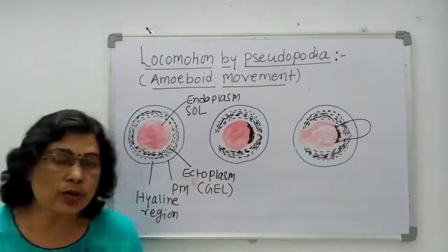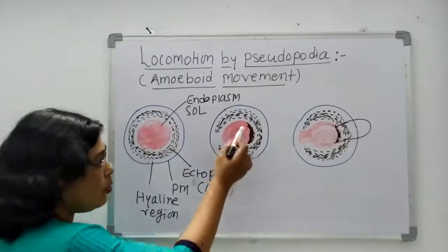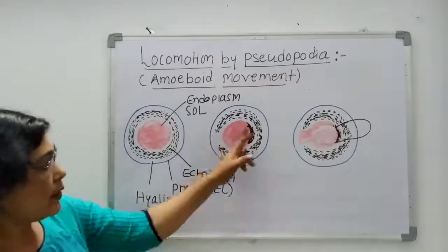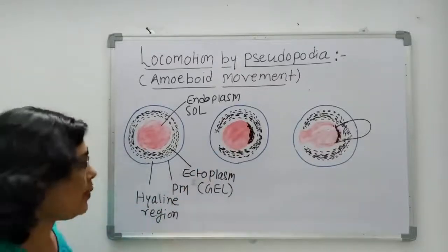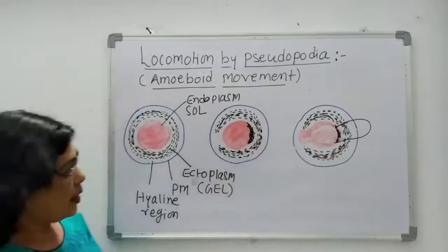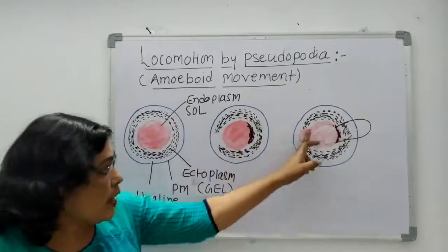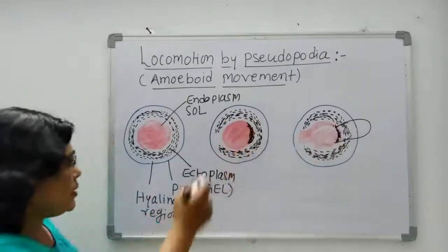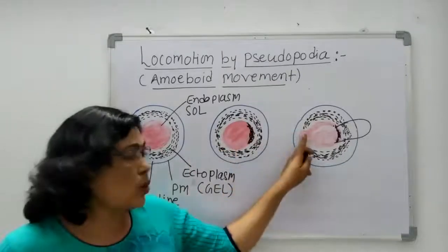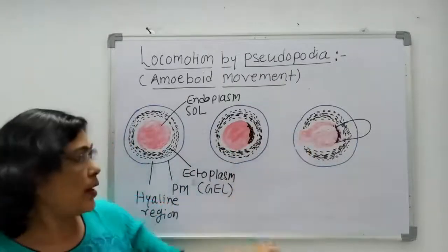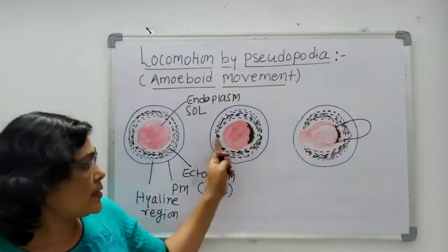According to Sol-Gel Theory, hota yun hai ki jis disha mein organism ko chalna hai, us disha ka jo sol region hoga, that is converted to gel because of some internal chemical changes. Ab next state yeh hai ki usi disha mein jo gel hota hai, that is converted into sol. So the sol is converted to gel, and the gel is converted to sol.